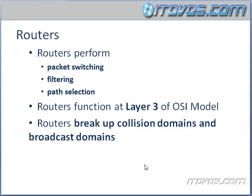Now let's talk about routers. Routers perform packet switching, filtering, and path selection. Routers will actually move packets of information from one network to another network. We can filter information going through the router by IP address — we can say yes, this information can be forwarded on, or no, it cannot. Routers also perform path selection because there can be multiple paths to a destination, and routers will pick what they think is the best path. Routers function at layer 3 of the OSI model — burn that into your brain, layer 3. And routers break up both collision domains and broadcast domains.